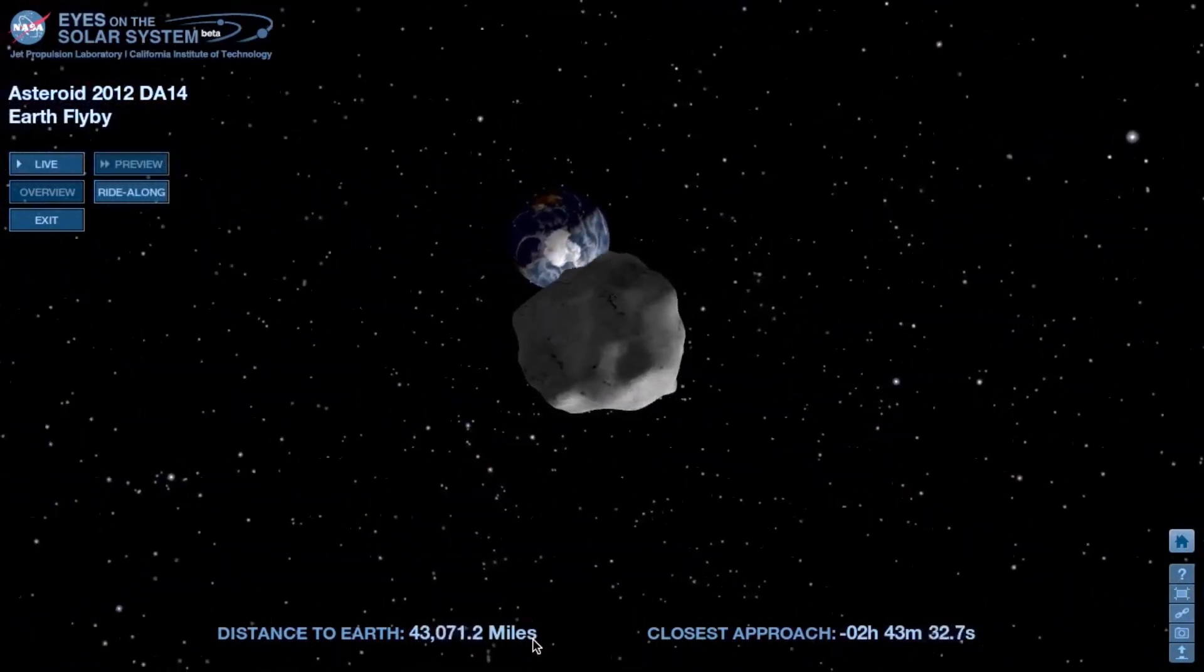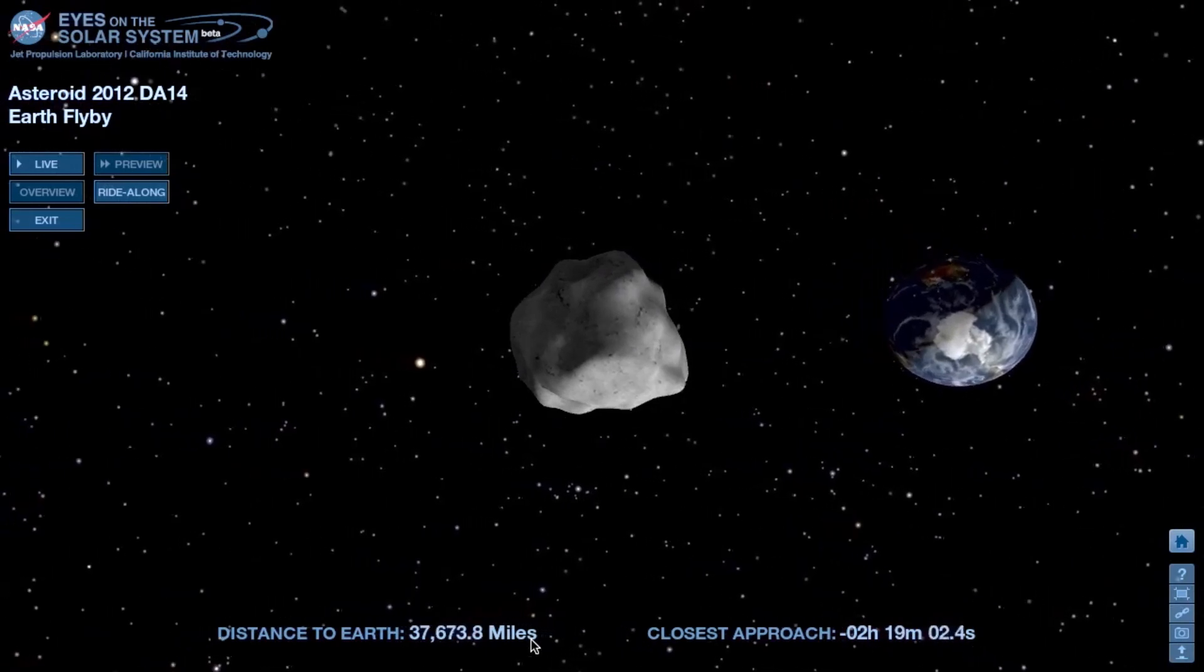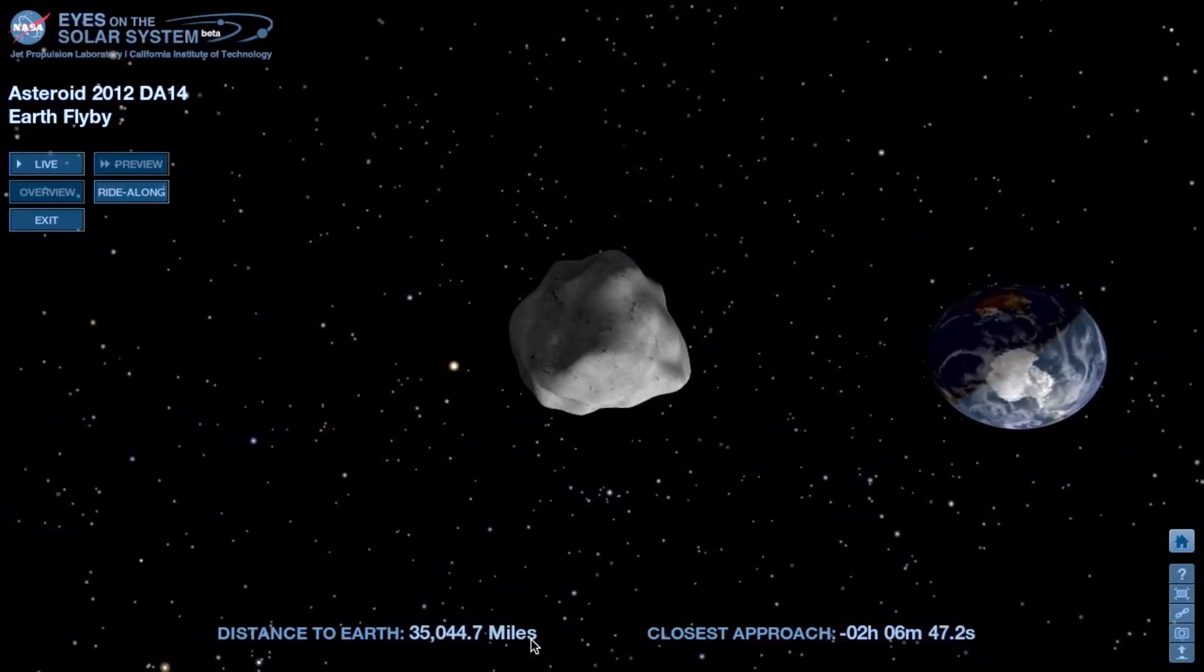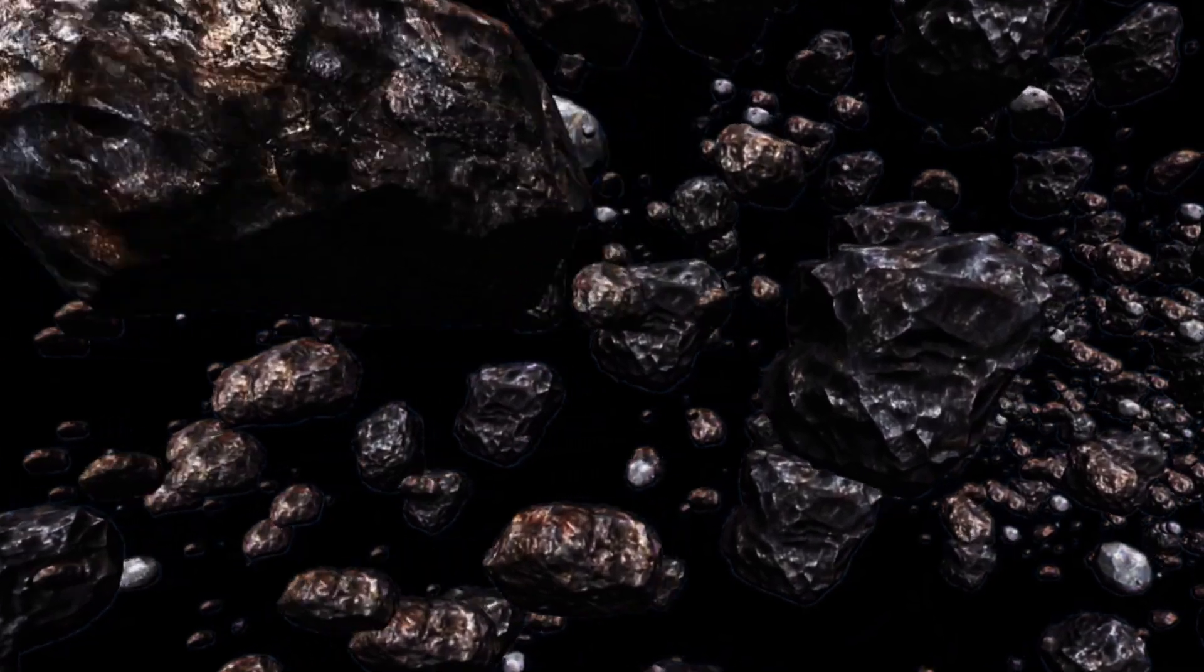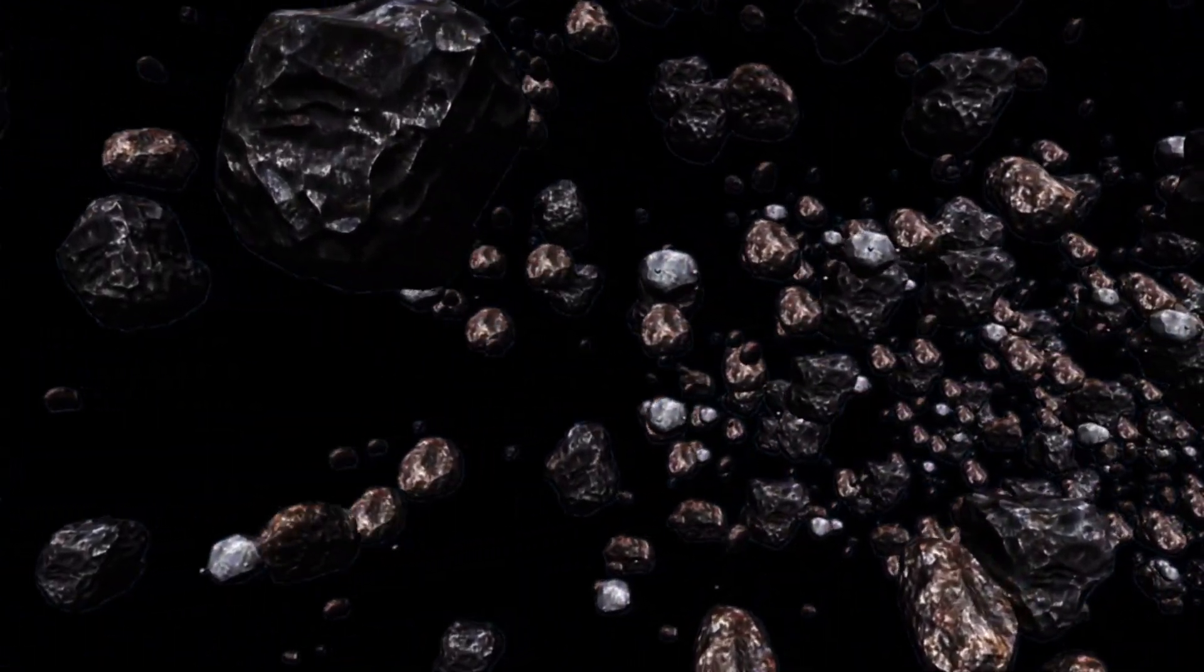However, the cosmos is unpredictable. Many asteroids remain undetected, with their paths hidden until they come dangerously close to Earth. This is a complex game of cosmic chess, and we are learning the rules as we go.